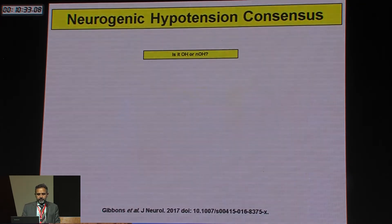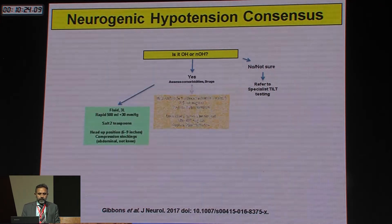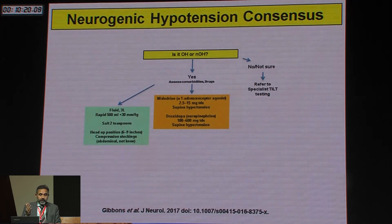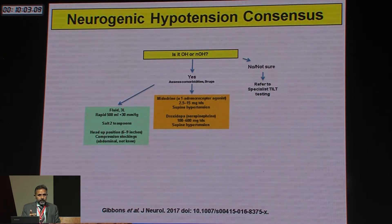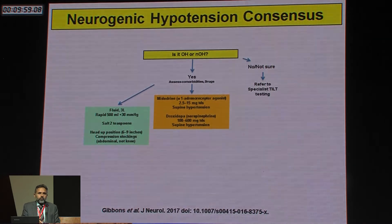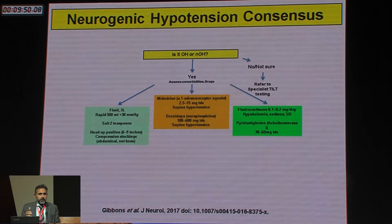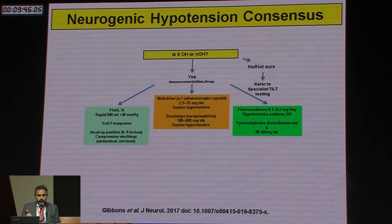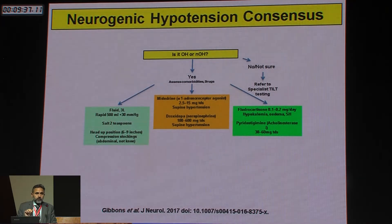Once you've identified neurogenic hypotension, how do you treat it? Send for a tilt test if unsure. Otherwise: give up to three liters of fluid per day and add salt unless the patient has end-stage renal disease. The FDA-approved medications are midodrine or droxidopa — start once daily, increase to three times daily. Non-approved options that can also work include fludrocortisone (watch for hypokalemia and edema) and pyridostigmine.